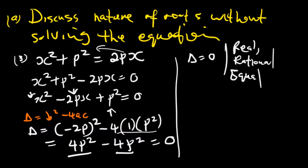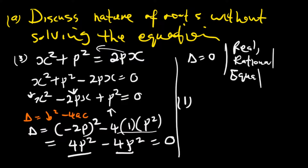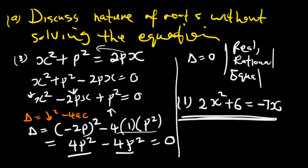Now try this problem yourself: 2x squared plus 6 equals negative 7x. Discuss the nature of the roots without solving the equation. Write it down now and post any questions in the comment section if you're struggling.